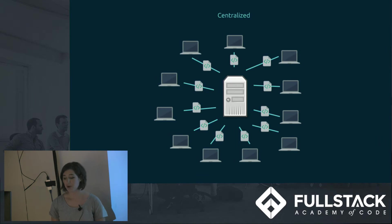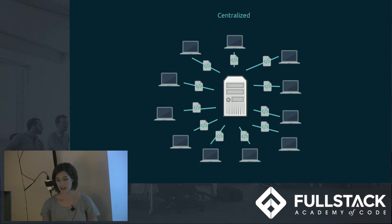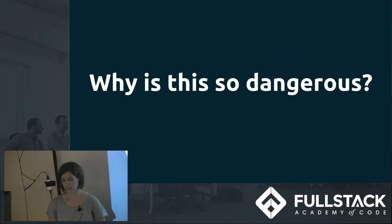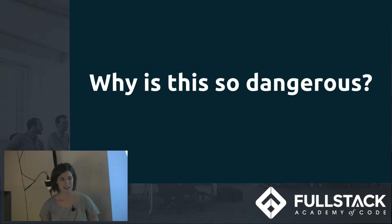But there's more. Another really big problem tied to location-based addressing is that it creates a system that is centralized. If a file can only be retrieved by going to one single location, we have many users relying on one single origin server. Why is this so dangerous? There are a ton of reasons — I could spend all day talking about the problems with centralized systems, but I'll just highlight a few.